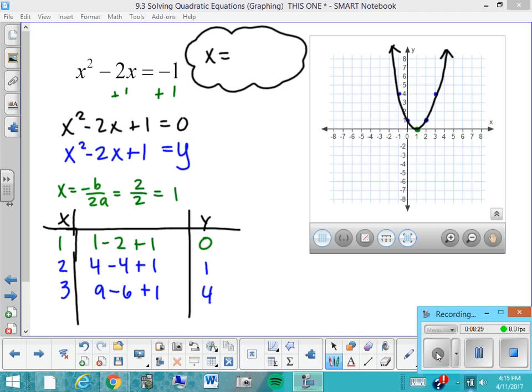So you can see that I've graphed this, and now I'm looking for the places where it intersects the x-axis or the x-intercepts. And in this case, there just happens to be one x-intercept, and that is 1. So that is my solution right there. And let's go on and try another one.